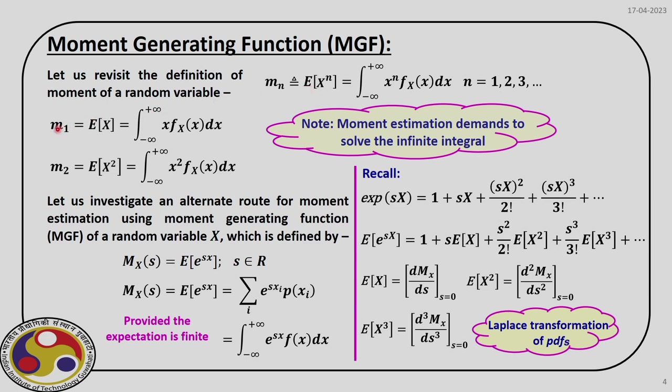If we put n equal to 1, we get the first moment. Similarly, if we put n equal to 2, we get the second moment. These moments are useful for uncertainty quantification. We have already studied variance algebra and seen how these moments are useful to quantify the uncertainty associated with functions we encounter in our design, for example a limit state. When we estimate these moments, we need to integrate the functions over the complete domain, and for every moment we wish to find out, we need to perform this integral.